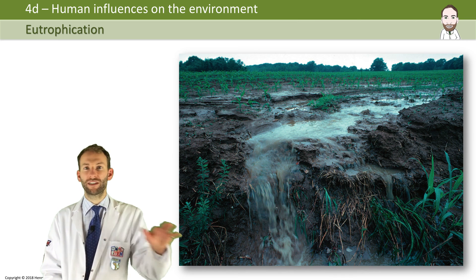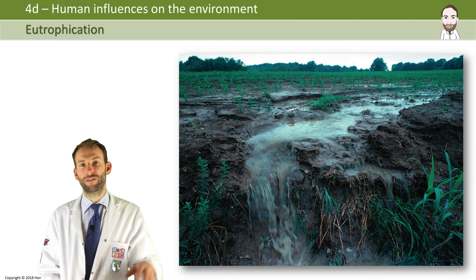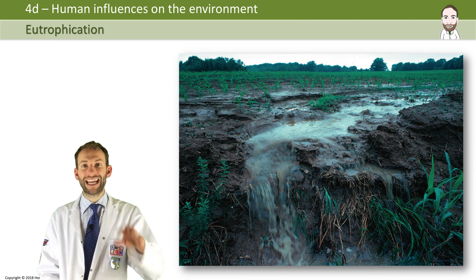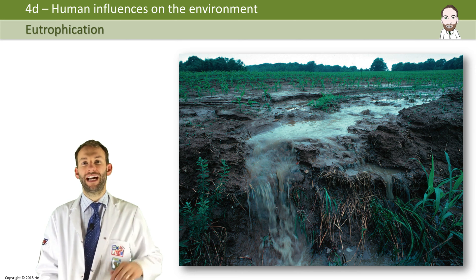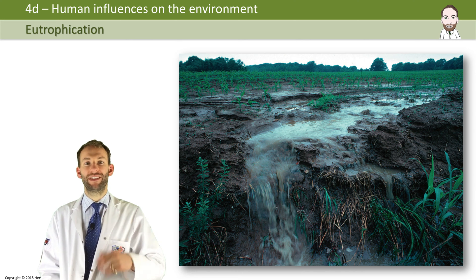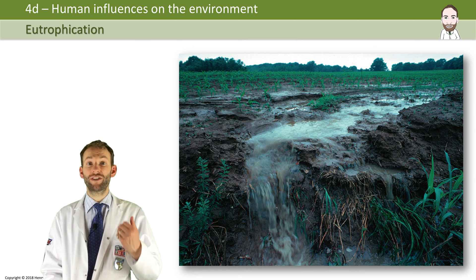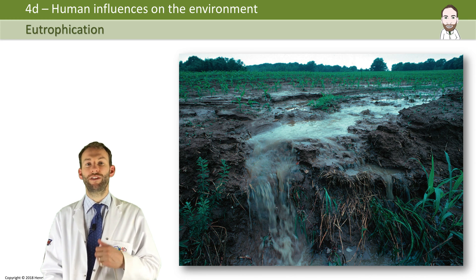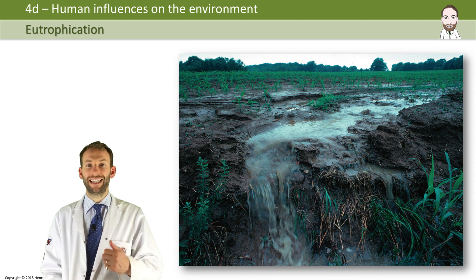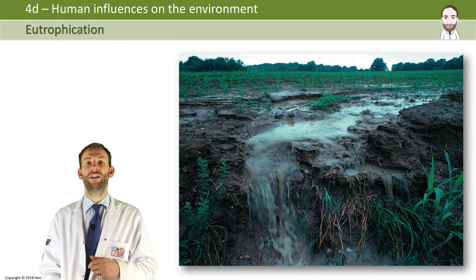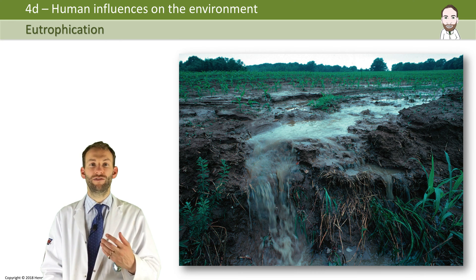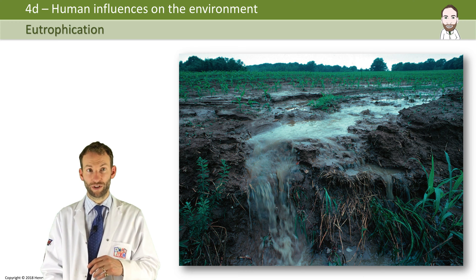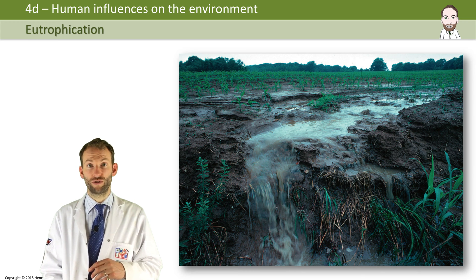What happens is a farmer spreads loads of fertilizer on the field, then it rains and it all gets washed off and ends up in the rivers and lakes. Sewage contains phosphates from detergents and nitrates from urine and feces. Both sewage that gets released into water systems and fertilizers that get leached into rivers and streams cause a process called eutrophication.